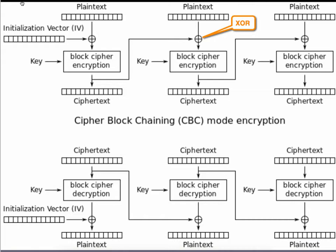This is how we use an initialization vector and XOR in a block cipher to help increase entropy. This is a very simple example of a block cipher — some block ciphers are more complex than this — but it gives you a good idea of how they work.